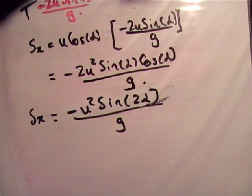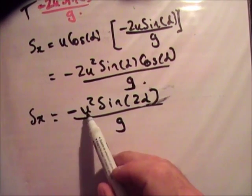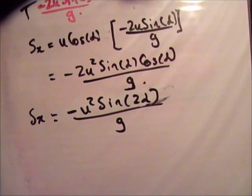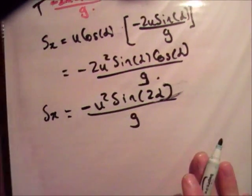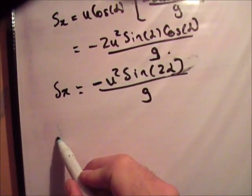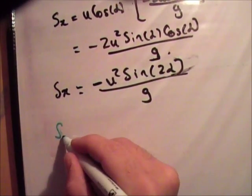Now, this is where we're going to do some calculus. And if you have a function, and we do have a function, the function we have here is S sub x, a function of u and alpha is equal to minus u squared sine 2 alpha over g.